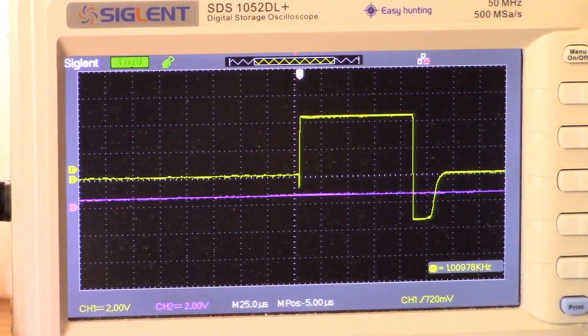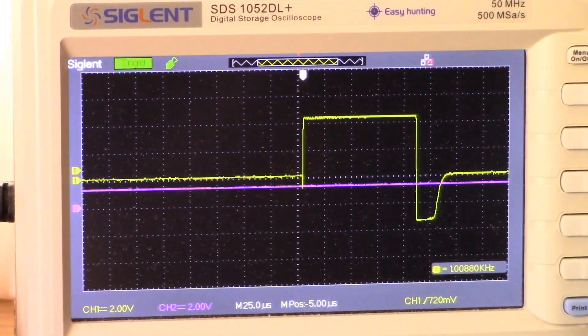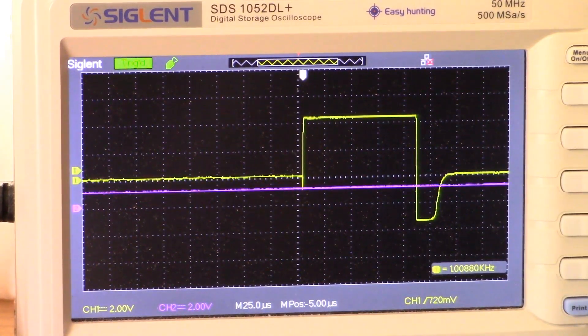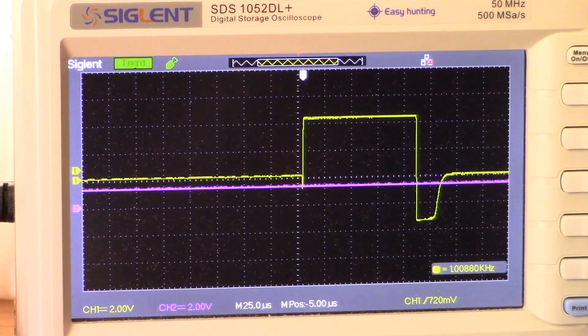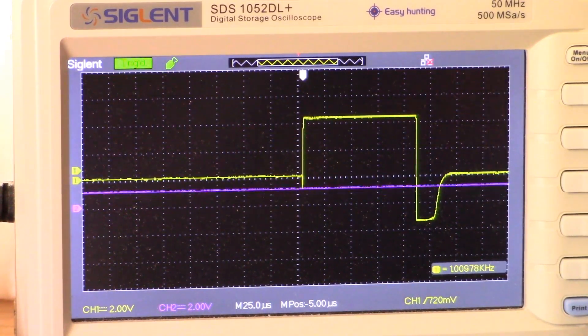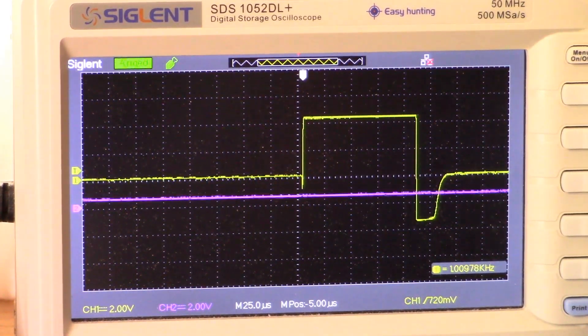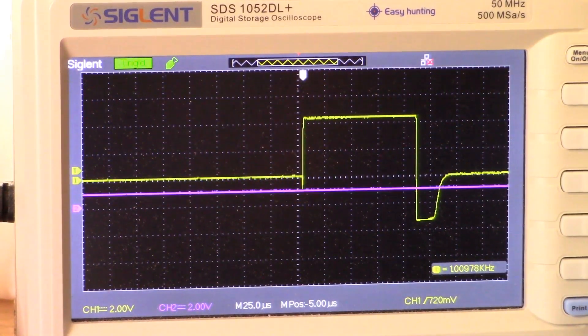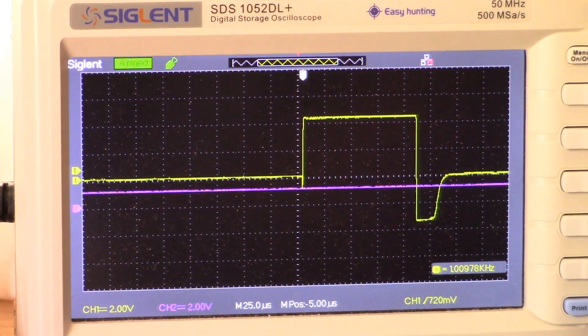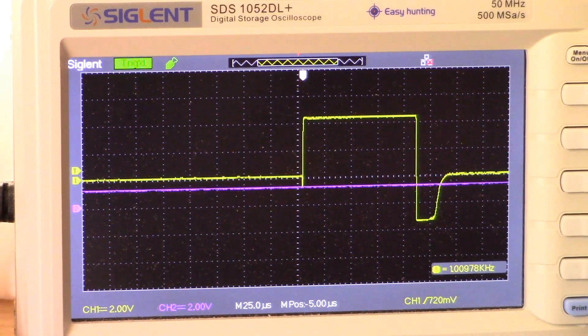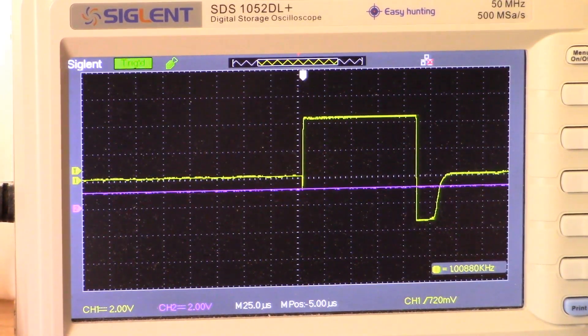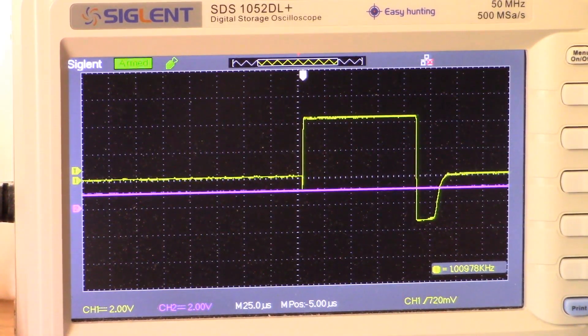All right, on screen now we have the output of the preamp, and on channel two the straight line there, that's the first stage of the integrator. So I am going to present a target to the coil and what we're going to see hopefully is that voltage level raising in amplitude.